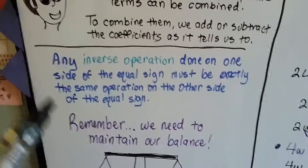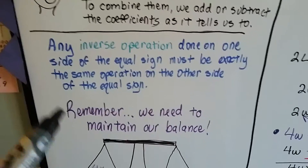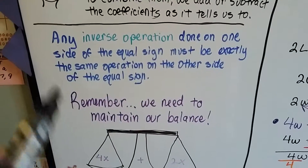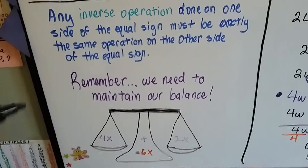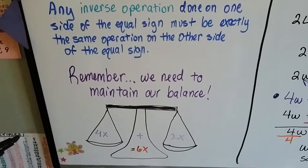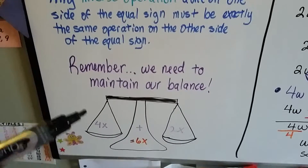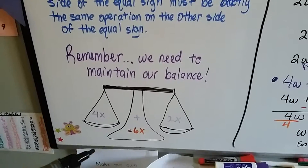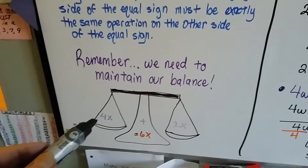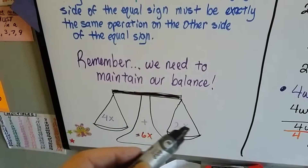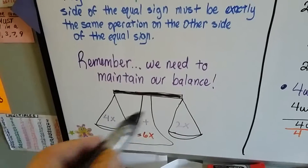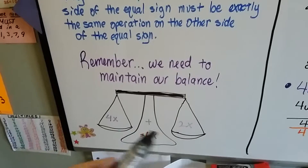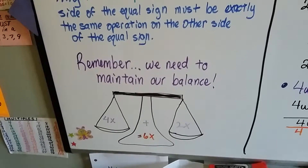Remember, any inverse operation we do on one side of the equal sign must be the exact same one on the other side — we need to maintain our balance. For example, if we have 4x and 2x, we have 6x. That would be combining like terms.